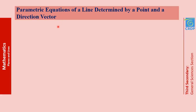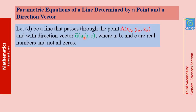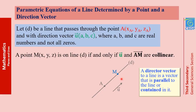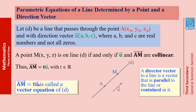Let's now see the second part of the chapter: parametric equations of a line in space — specifically, how to find the parametric equations of a line determined by a point and a direction vector. D is a line that passes through point A with U as a direction vector. A direction vector to a line is a vector either parallel to the line or contained in it. If we choose a variable point M on D, the two vectors AM and U are collinear, so AM = t·U where t is any real number. This is the vector equation of line D.